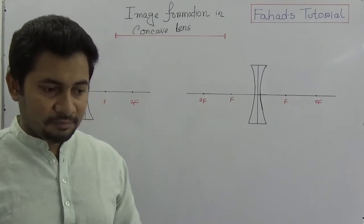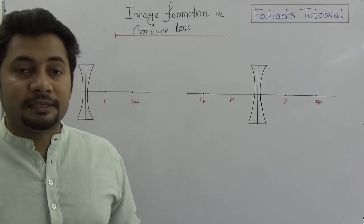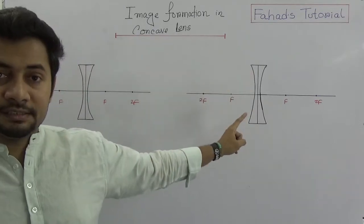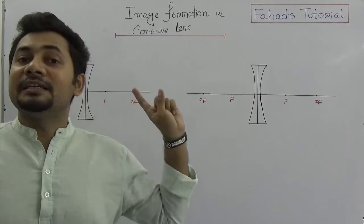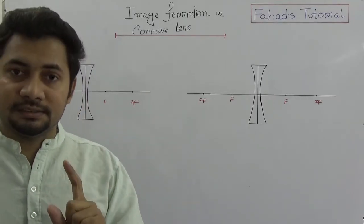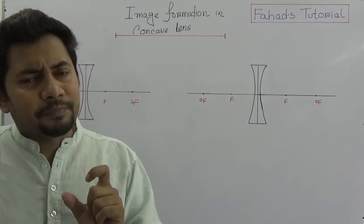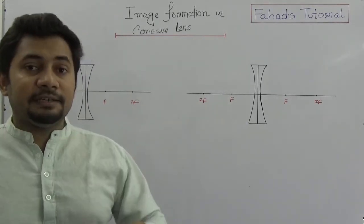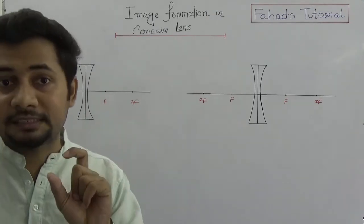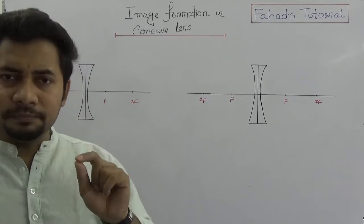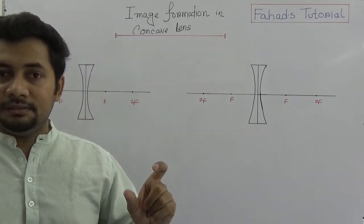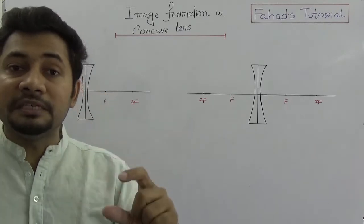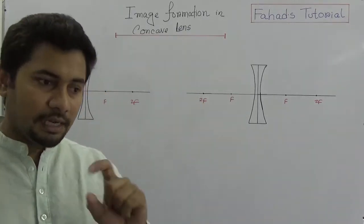You might ask why I draw two pictures. It's important to show that wherever you keep your object in front of a concave lens, the image will always be formed in the same region. This is not the case for convex lens. In concave lens it's simple: the image will always be virtual, always erect, and always diminished or smaller.